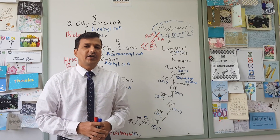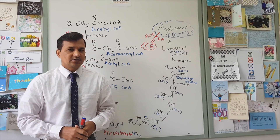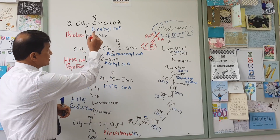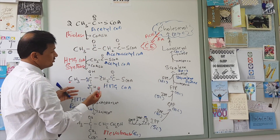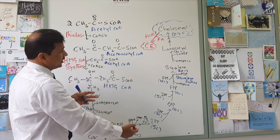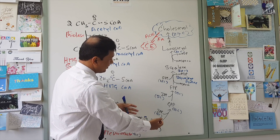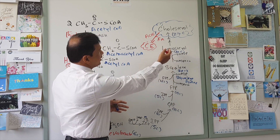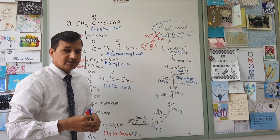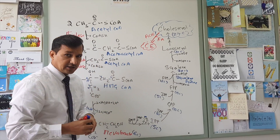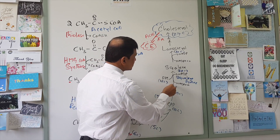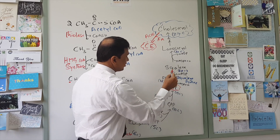Let me explain what is the fate of farnesyl pyrophosphate during cholesterol biosynthesis. As you can see, acetyl-CoA molecules condense with one another making mevalonate, and mevalonate will form isopentenyl pyrophosphate, dimethylallyl pyrophosphate, and farnesyl pyrophosphate, which eventually goes into cholesterol biosynthesis. Now let me explain the other fates of this farnesyl pyrophosphate, which is an intermediate in cholesterol biosynthesis.